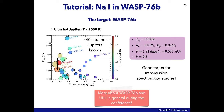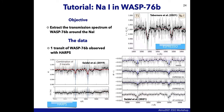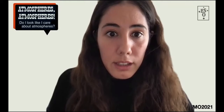The tutorial objective is to extract the transmission spectrum of WASP-76b around the sodium lines using one HARPS transit observation. This same dataset was used by Seidel et al. 2019, together with two more transits, to detect sodium absorption in the planet's atmosphere. Other studies using ESPRESSO have also obtained sodium absorption from this atmosphere.